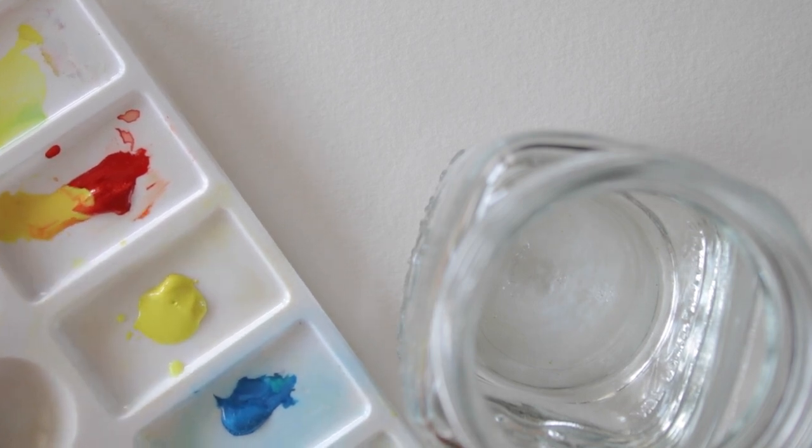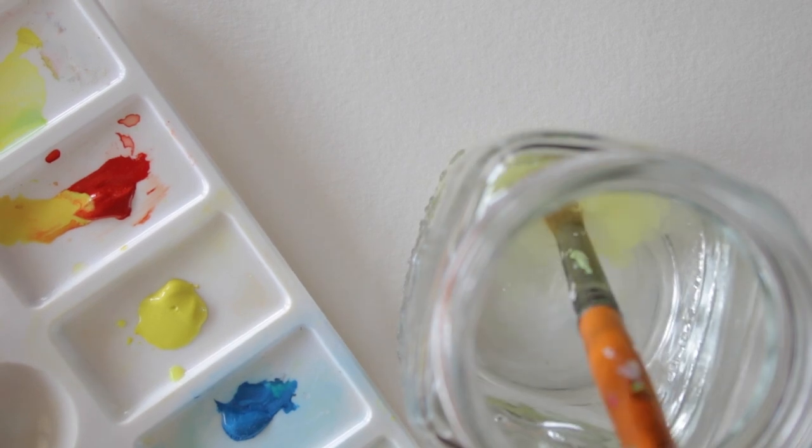Then start mixing your paint into the color you like. Here I'm mixing yellow and red to make orange.